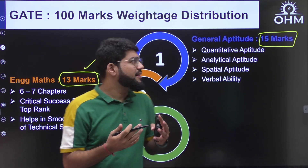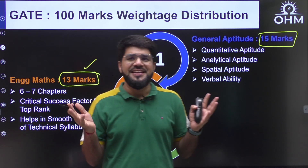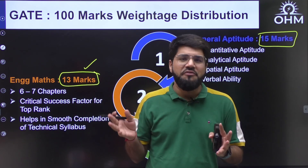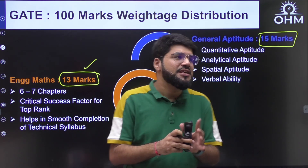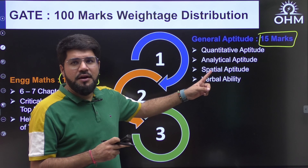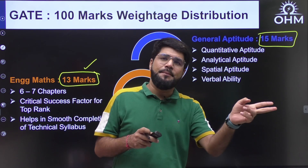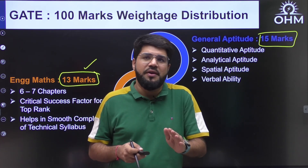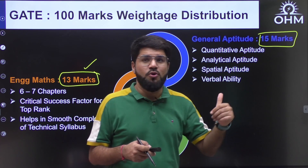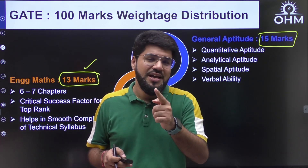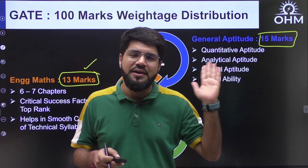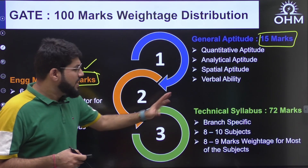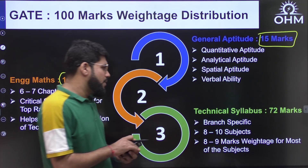15 marks for aptitude and 13 for maths — that's 28 marks which should be very scoreable for engineers. With relatively small effort, this 28 marks can be grabbed. The effort required to study maths or aptitude individually is less than what is required to study any technical subject. With less effort you can conquer more marks, and GATE is an examination where there's no individual cutoff for non-tech or tech — out of 100 you have to maximize your marks.